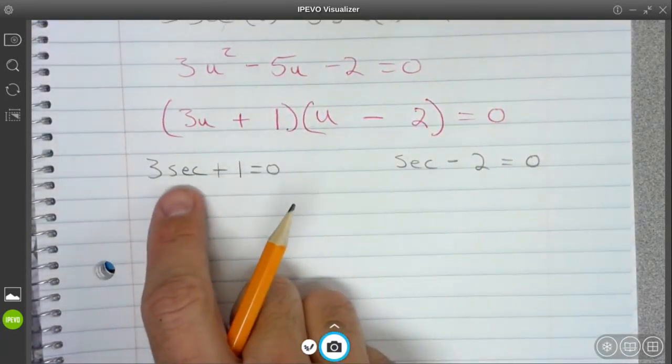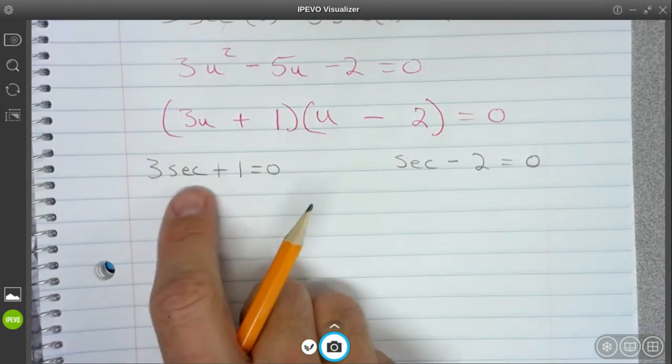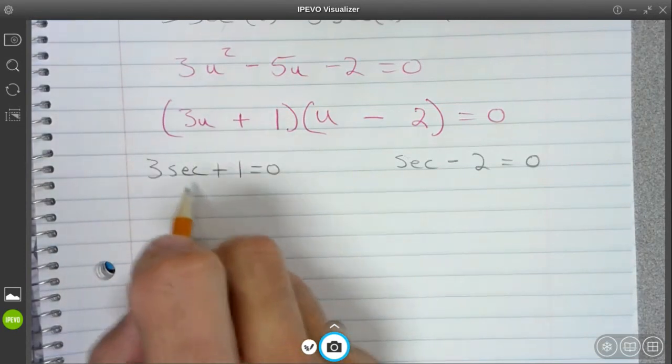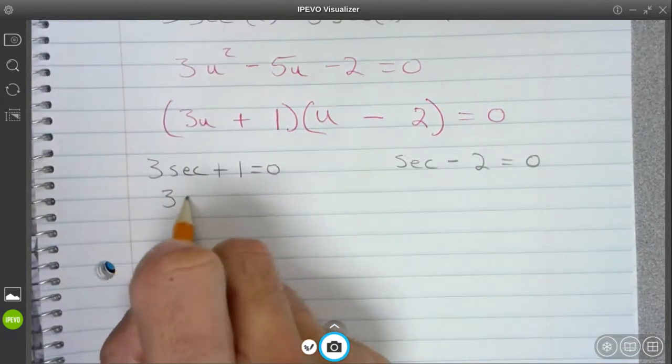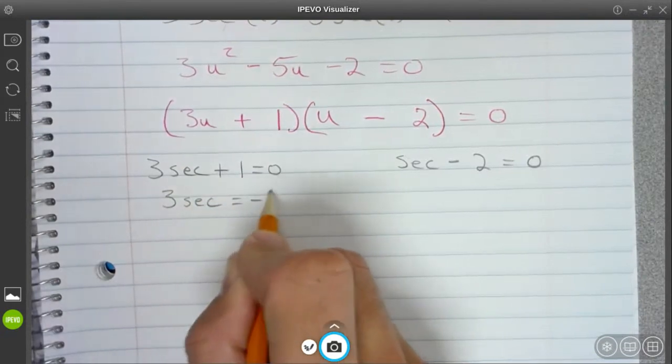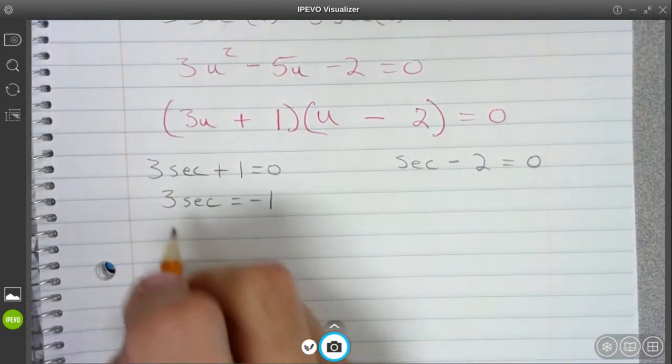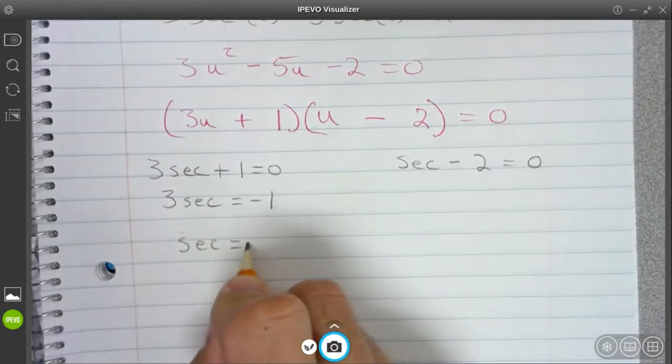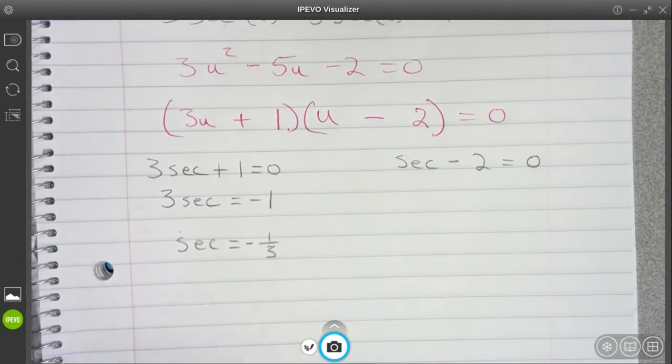All right, so before I swap over to cosine, I'm going to go ahead and isolate my trig part. So 3 secant is equal to negative 1. I'll divide by 3 and I'm going to get secant is equal to negative 1 third. Nice.